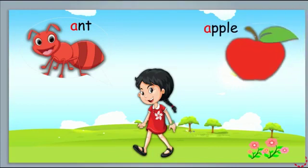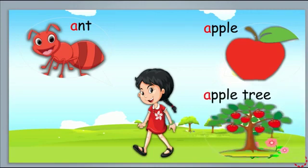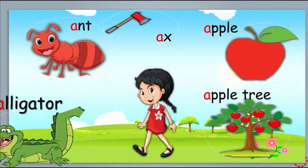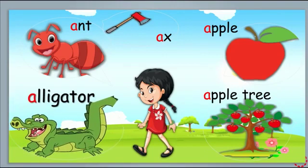So today I saw many things. I saw a little ant, and the ant says ah, ah, ah. I saw an apple, a big apple, and a big apple tree. I saw an axe and an alligator. Alligator, axe — what sound can you hear?